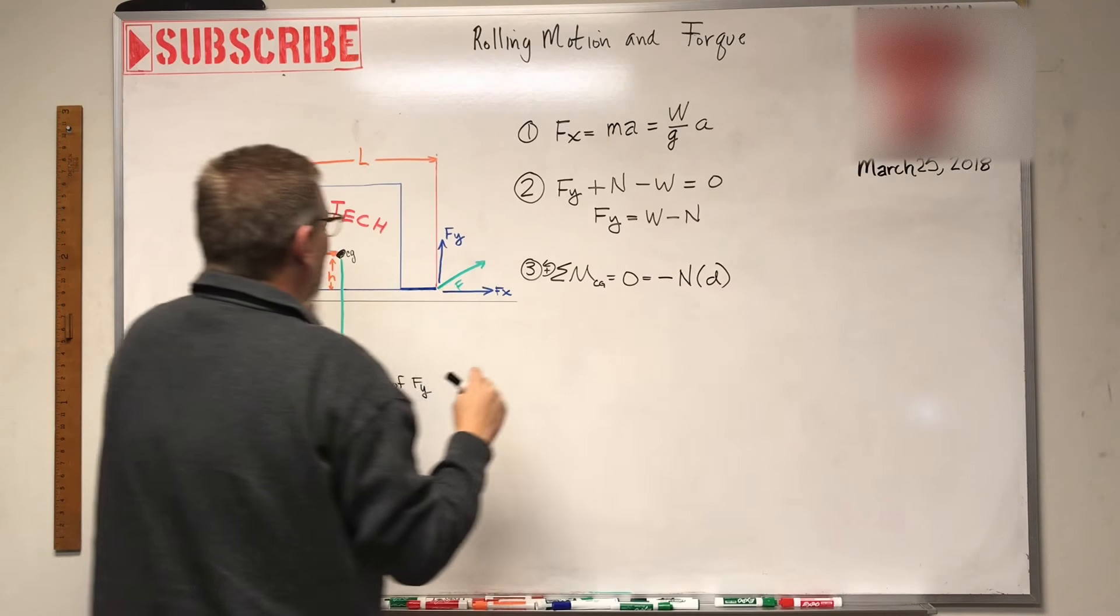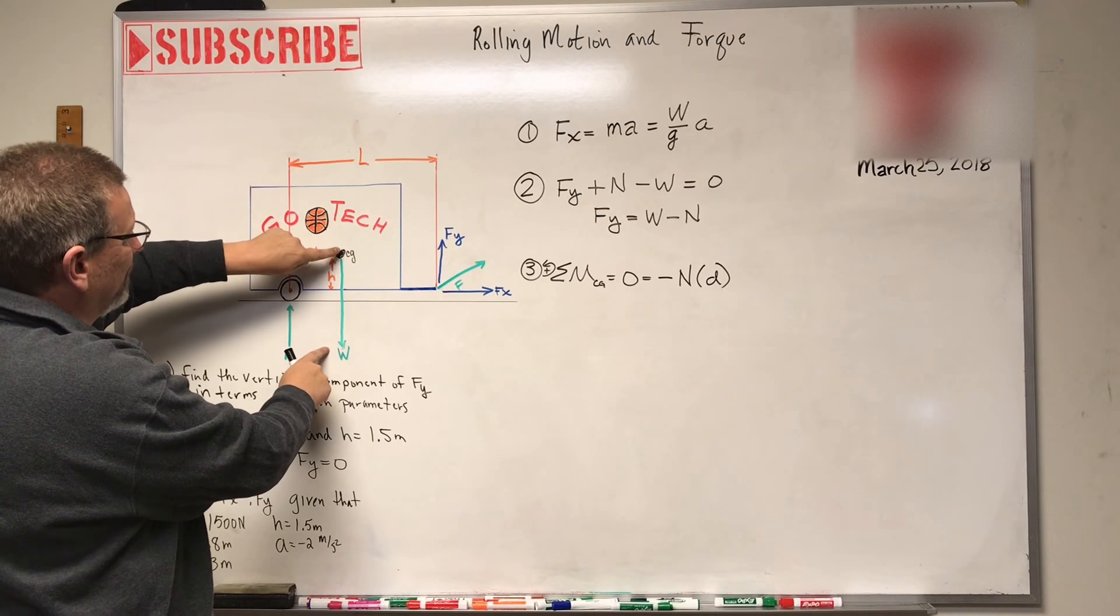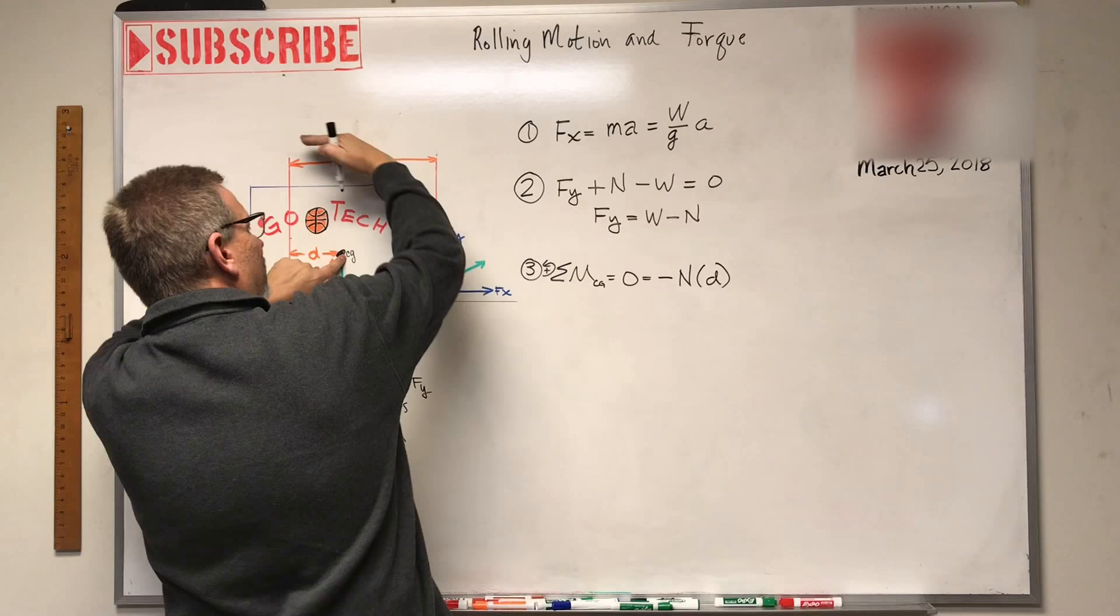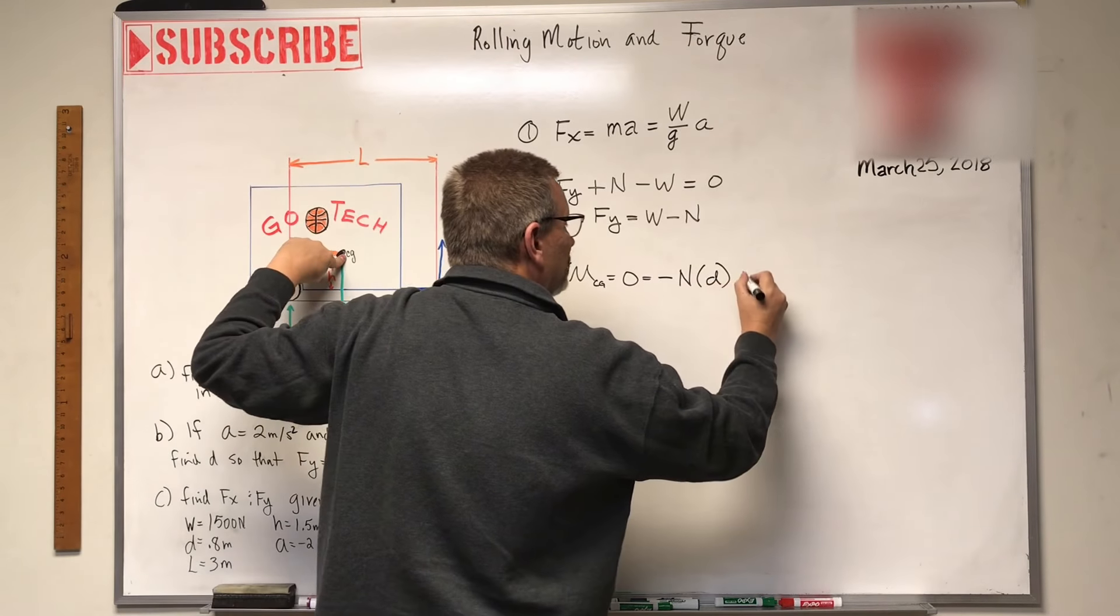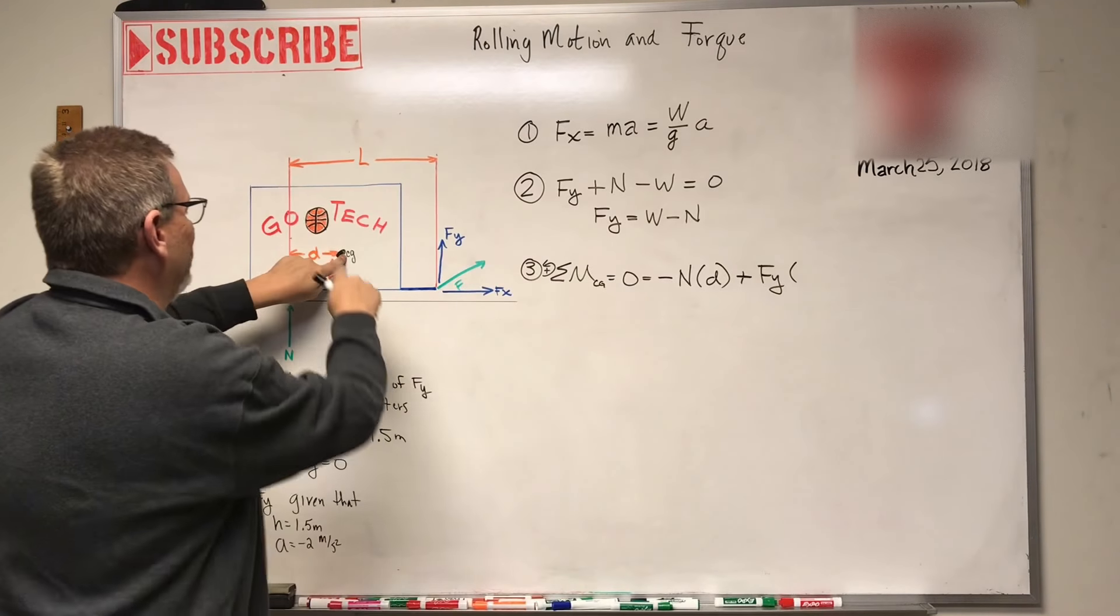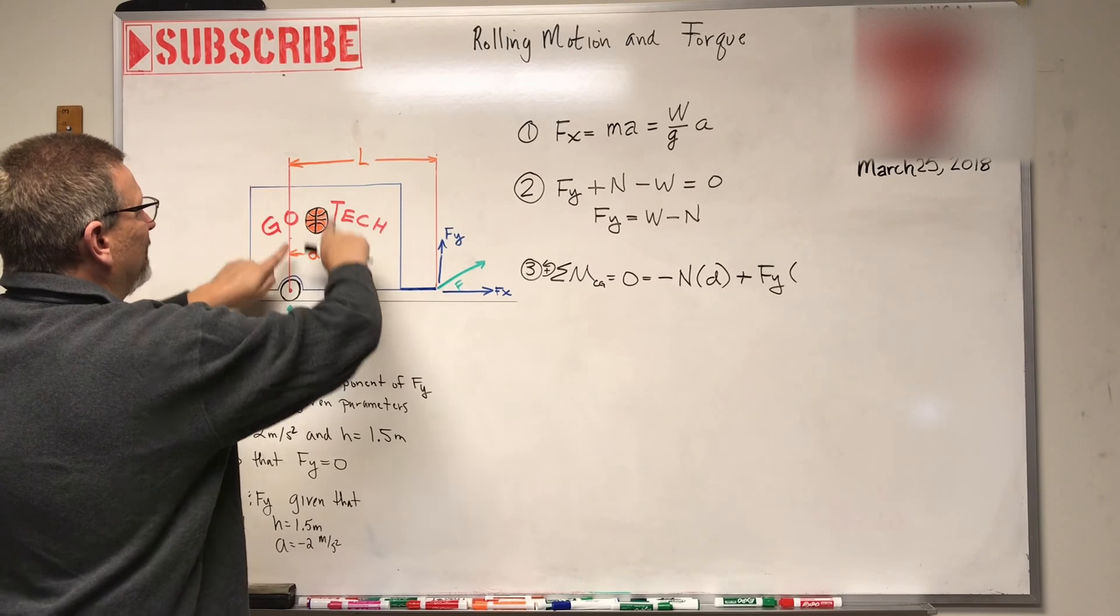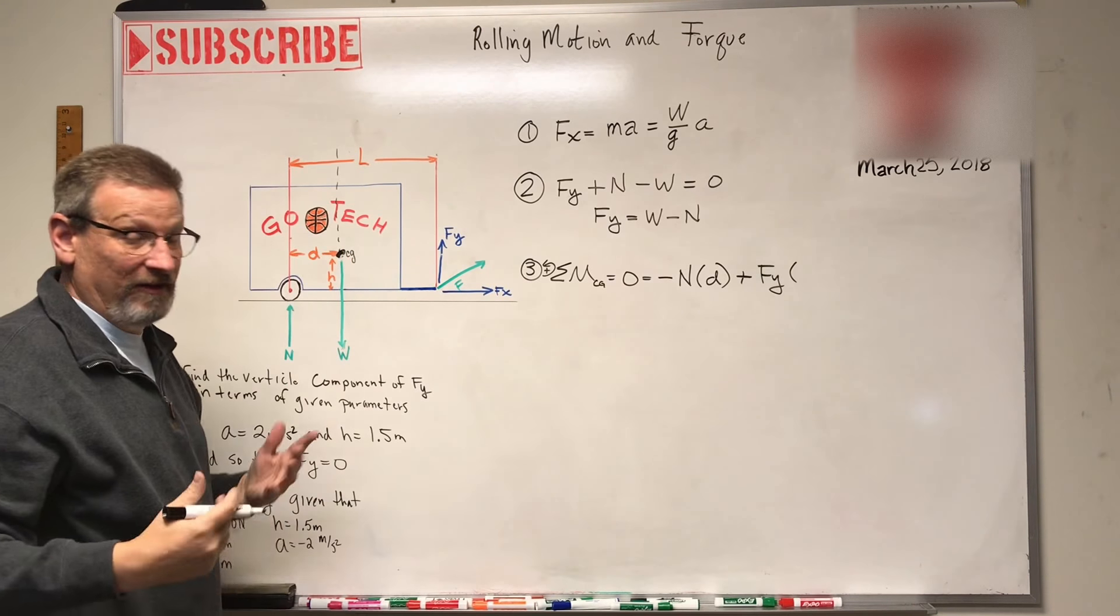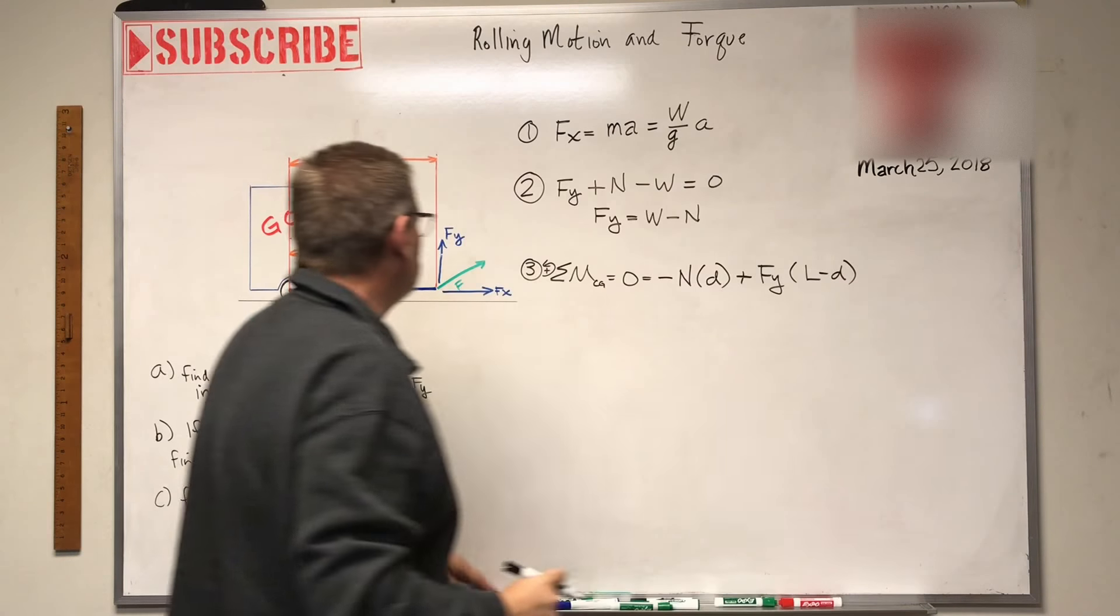Okay. And then what do I have? I've got W, but that's a cha-cha force. It's knocked out. Because he goes through the point we're taking the moment. I've got Fy over here. Now Fy is going to rotate me positive, right? It's counterclockwise. So plus, plus Fy times how far away is it from here over to there? Well, it's not L, but it's L. And if I subtract that D off of that, that's how far it is. So it's times L minus D.